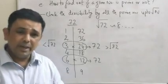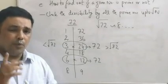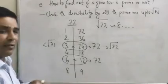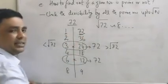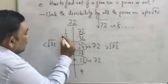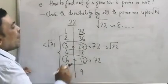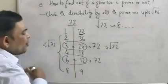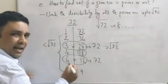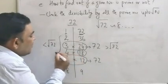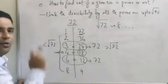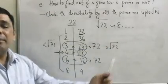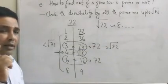That means — bringing you to the conclusion — if a number has any factor other than 1 and the number itself, you will find that factor before or by the time you reach √N. It is something like this: if 72 is going to be divisible by 18, then the pair component of 18 will divide 72 before you reach √72. And that is why: check the divisibility by all the prime numbers up to √N.